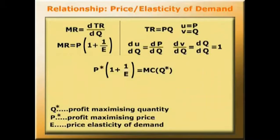Rearranging that, P star minus MC star over P star equals minus 1 over E. Now, that's important because the left-hand expression is the markup on marginal cost expressed as a proportion of the price.